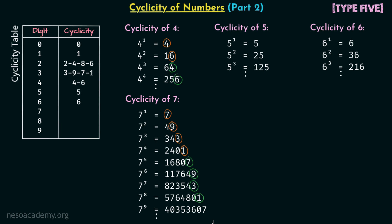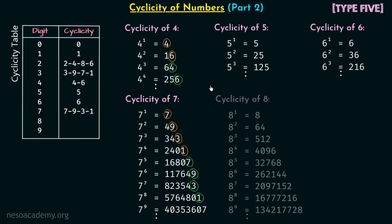When you calculate further you will again get 7, 9, 3, 1. So 7, 9, 3, 1 is the cyclicity of digit 7. Now let us find out the cyclicity of digit 8 — we have 8, 4, 2, 6, and then again we are getting 8.